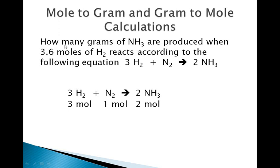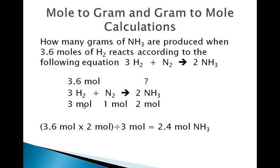The thing that we're looking for is the number of grams of NH3, so we're going to put a question mark over the NH3. In order to solve this, we recall that this is a 3 to 2 relationship, and so this must also be a 3 to 2 relationship. Take 3.6, multiply across times the 2, and then go back and divide by the 3. 3.6 moles times 2 moles divided by 3 moles is equal to 2.4 moles of NH3.